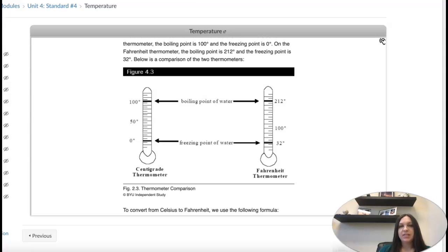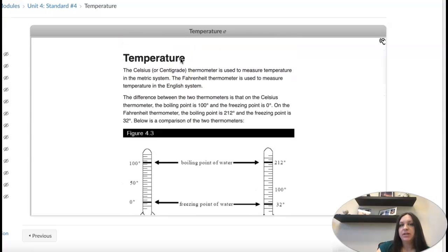So 4.3 is about temperature. In the U.S. we use Fahrenheit. Most other countries use Celsius. So think of if you're traveling or baking using a metric system, you're going to need to know how to go back and forth from Celsius to Fahrenheit.